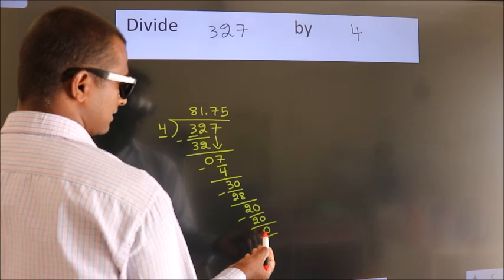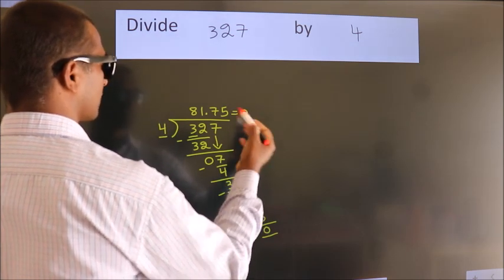We got remainder 0. So this is our quotient. Stop.